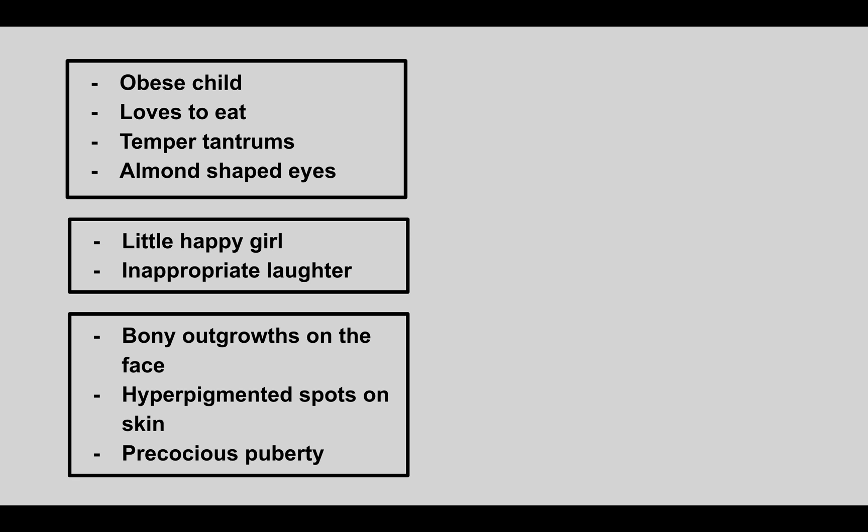The next condition: an obese child who loves to eat, has temper tantrums, and almond-shaped eyes. This is Prader-Willi syndrome. There are two main ways to get this: paternal deletion of chromosome 15, or uniparental disomy of the mother's chromosome.